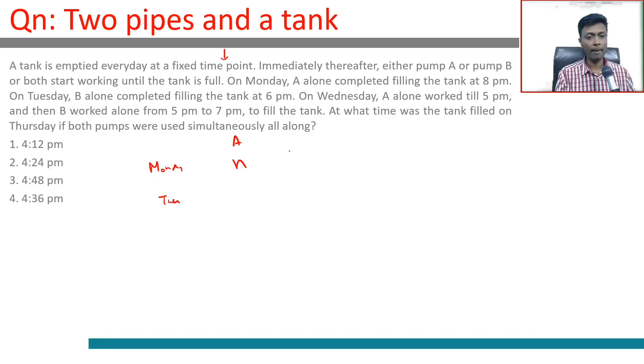On Tuesday, B alone completely filled the tank at 6 PM, n minus two hours. B is open for two hours lesser than A. On Wednesday, A alone worked till 5 PM, this is n minus three hours A has worked, and then B worked alone from 5 PM to 7 PM to fill the tank, two hours to fill the tank.